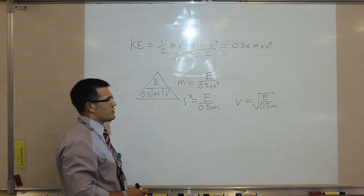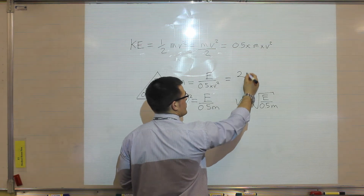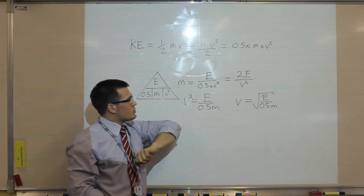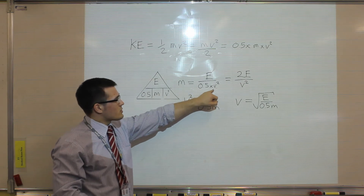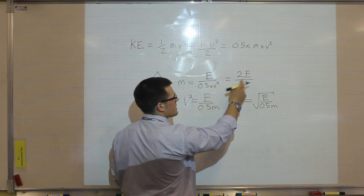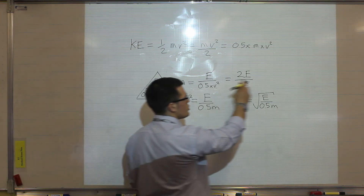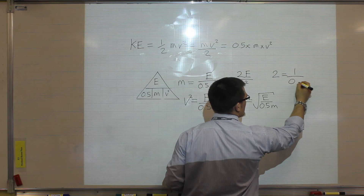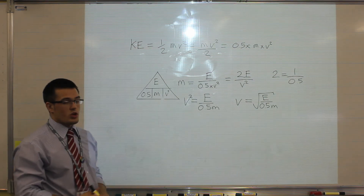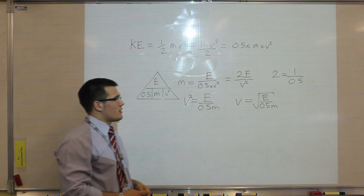If you watched the other video on rearranging, the equation found for mass there was subtly different: mass equals 2E divided by v squared. It's important to remember that multiplying E by 2, or multiplying v squared at the bottom by 0.5, are the same thing — they are equal. This is because 2 equals 1 over 0.5, so those two quantities are interchangeable. Whichever method you choose — the triangle method or rearrangement from first principles — stick with the number you come out with and it will still be correct.